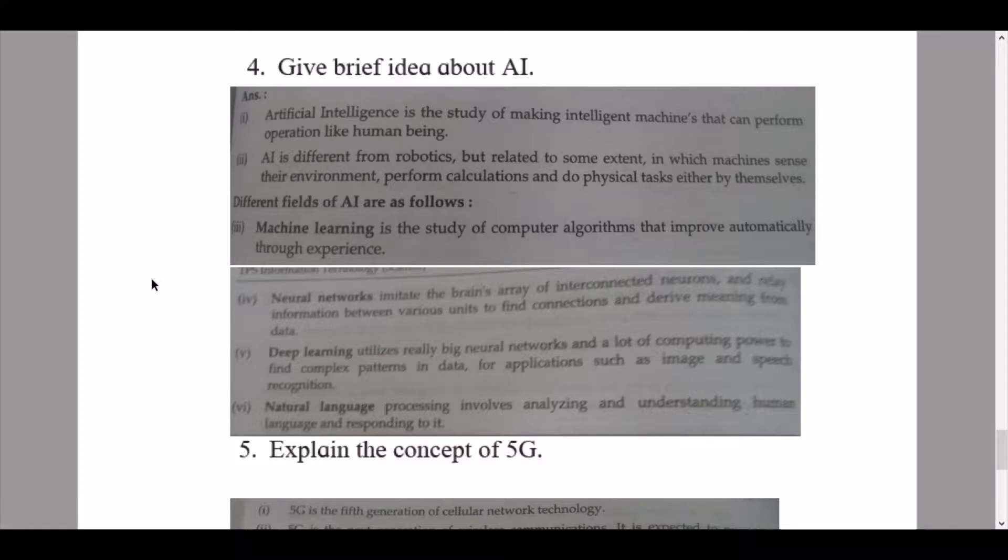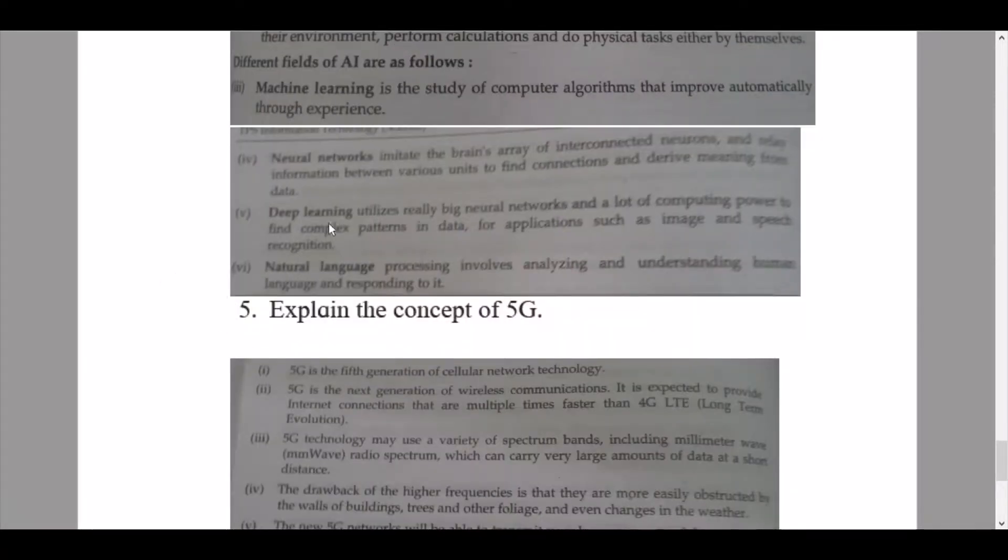Different fields of AI are as follows. The first one given to us here is machine learning: it's the study of computer algorithms that improve automatically through experience. I apologize if the next part is a little blurry, I'll just read it out so that you can get an understanding. If you can't understand this, please contact me on the Telegram group for doubts. I'll just type it out so that you can understand better.